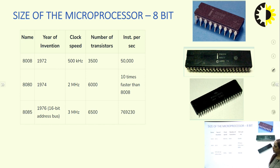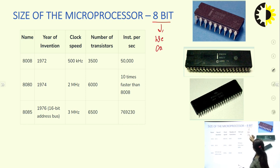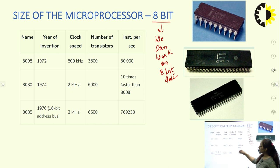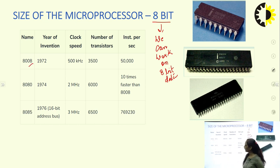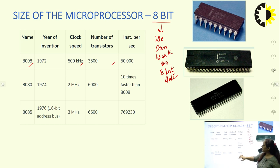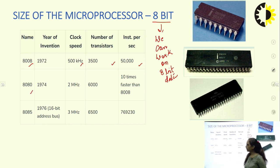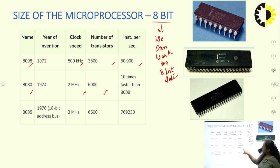In the 8-bit processor series, the first microprocessor is the Intel 8008, invented in 1972. It works on a clock speed of 500 kilohertz, has 3500 transistors, and can process 50,000 instructions per second. The next IC, the 8080, was invented in 1974, works on 2 megahertz, has 6000 transistors, and is 10 times faster than the 8008 IC.